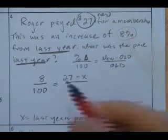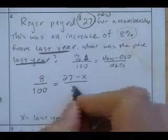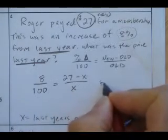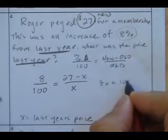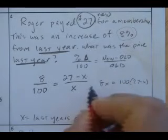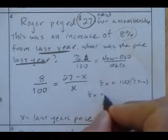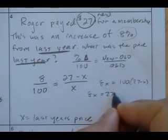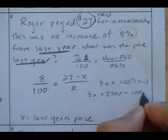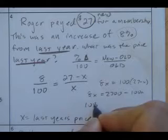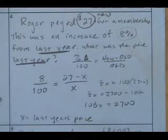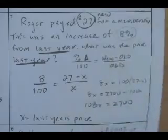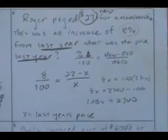Now I solve: cross multiply to get 8 times x equals 100 times (27 minus x), so 8x equals 2,700 minus 100x. Add 100x to both sides: 108x equals 2,700. Divide to find x — how many 108's go into 2,700 gives last year's price.